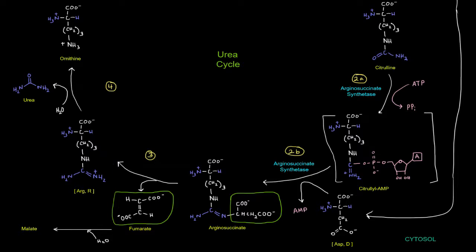And that is going to be catalyzed by arginosuccinate lyase. So it's going to cut arginosuccinate into arginine and fumarate. And that fumarate can be converted into malate by an enzyme called cytosolic fumarase. It's just fumarase, just in the cytosol.